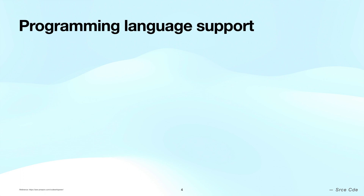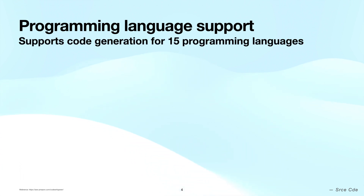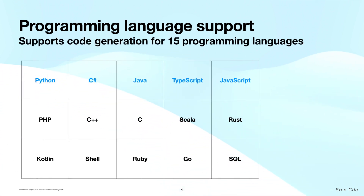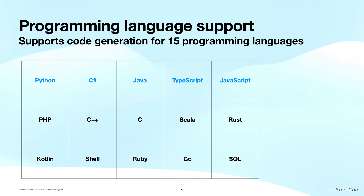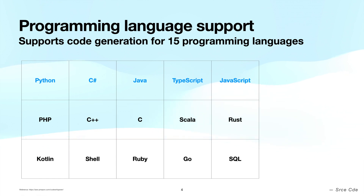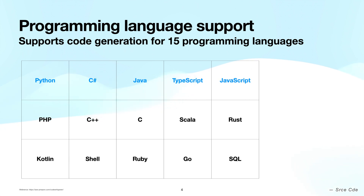CodeWhisperer supports code suggestions for 15 programming languages. Python, Java, C#, TypeScript, and JavaScript are the programming languages with the most support in terms of caliber of training data, and these languages are highlighted in blue. Now let's have a look at the IDEs that CodeWhisperer supports.